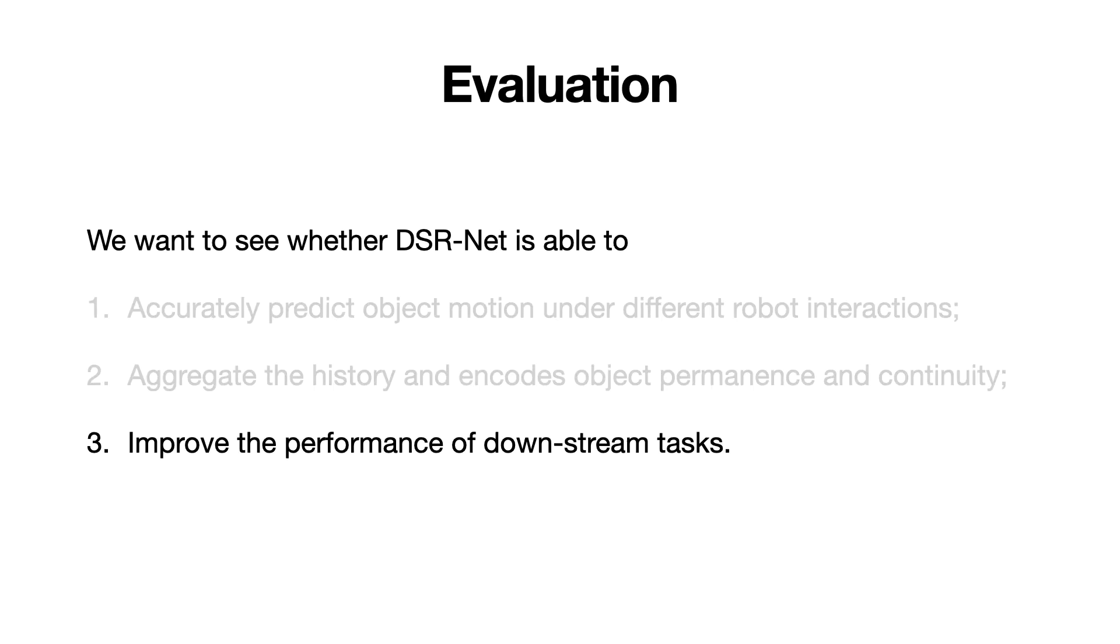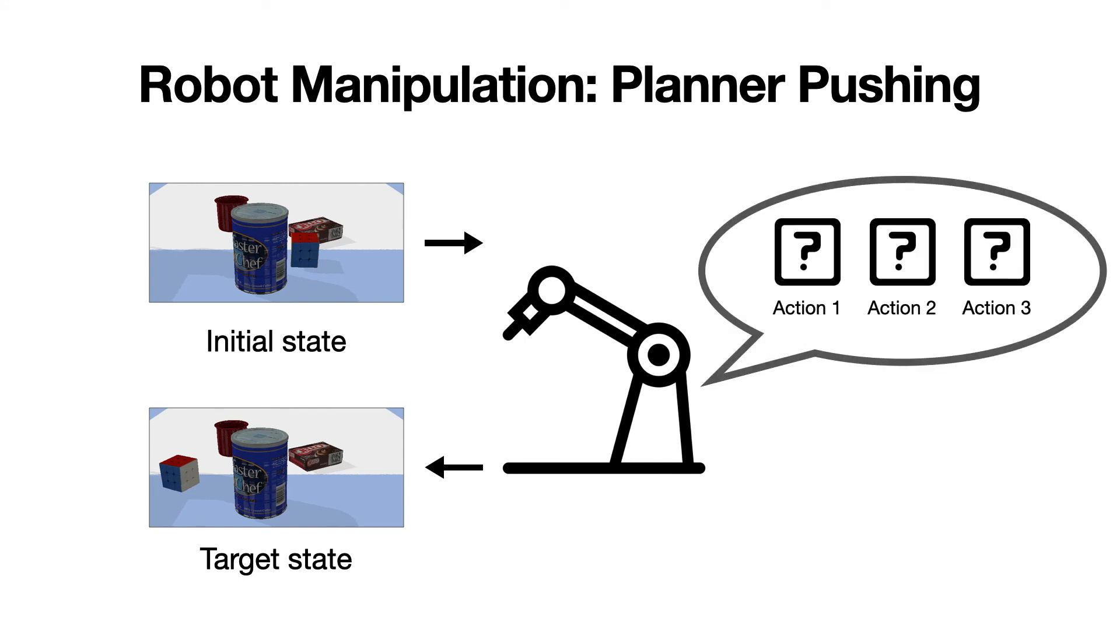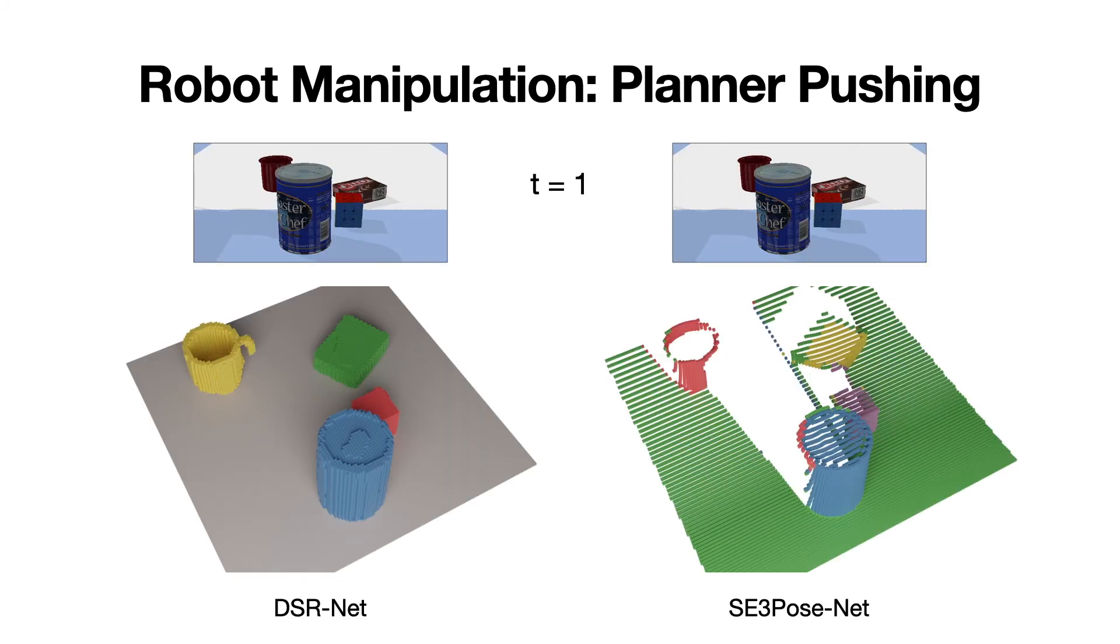Finally, we want to evaluate whether dynamic scene representation can improve the performance of downstream tasks. The goal of the task is to generate a sequence of robot actions in order to push objects in the scene to match a target state. We apply a simple shooting-based MPC method to generate and plan for a sequence of actions that minimize the cost. In each step, we sample sequences of actions by sampling actions around predicted masks. Then the action with the lowest cost is chosen to execute.